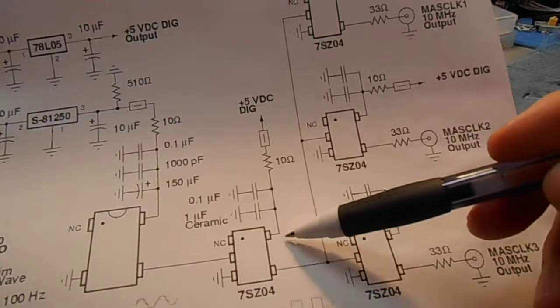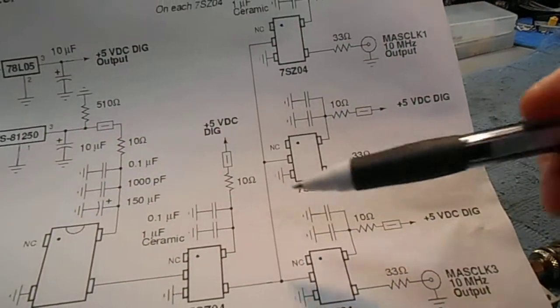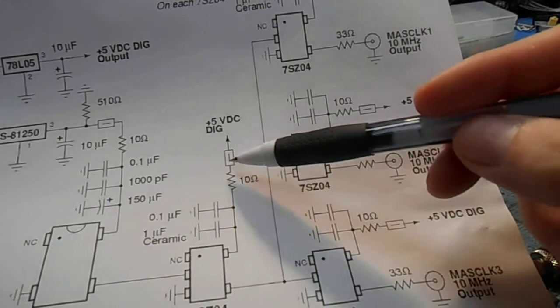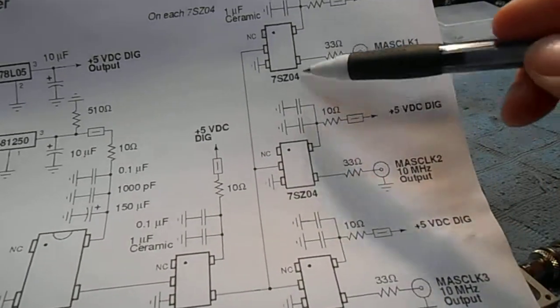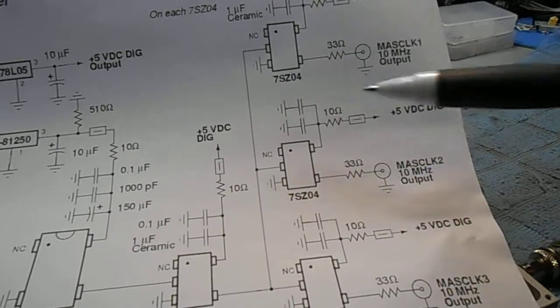And since we can isolate the individual VCC lines using a series ferrite beads and a series 10 ohm resistor, you can kind of decouple the noise from each of the individual inverters, buffers.